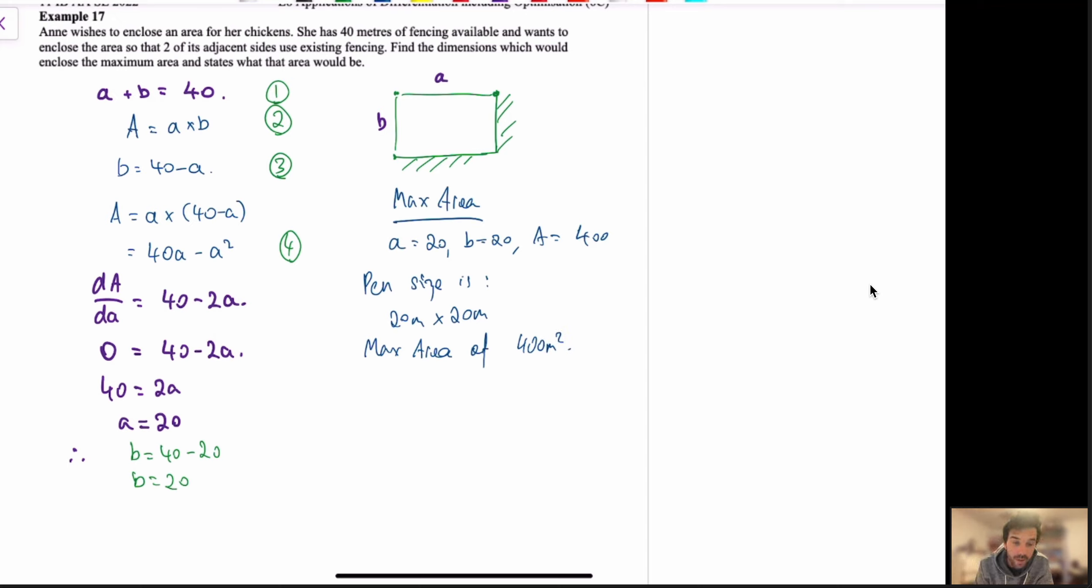Now, a rule of thumb with this, all optimisation questions, typically, they'll tend towards squares, unless you start putting constraints on the actual dimensions. So, rule of thumb, if you're not sure what to do, it's usually a square. Well, I hope this was useful for you. Thank you.